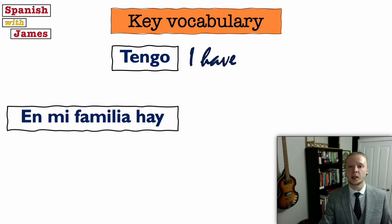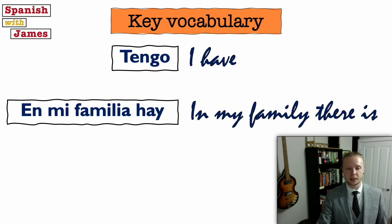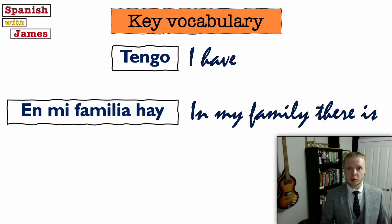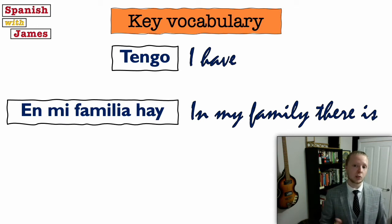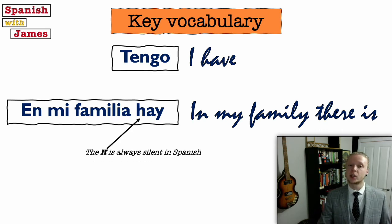We could also say en mi familia hay — in my family there is. Now careful with the pronunciation here because hay, H-A-Y, it's pronounced a bit like the English word 'I'. The H is always silent in Spanish. So we've got tengo meaning I have, en mi familia hay meaning in my family there is, and that H is always silent.